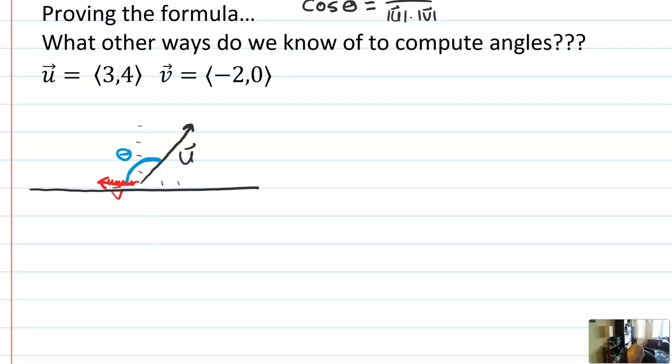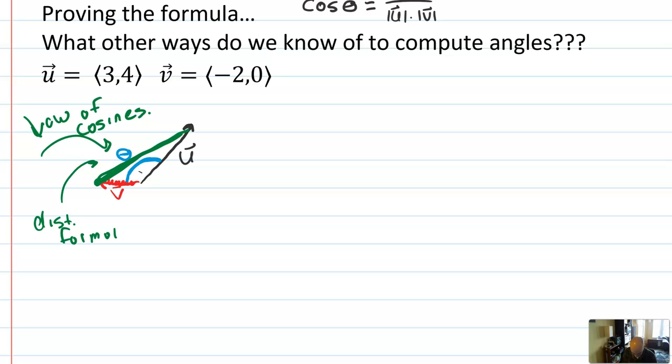Going back to the example from the last video of 3,4 dotted with, or the angle between 3,4 and -2,0, I want to think about some other ways that we know to find angles between two rays like this. One such way would be to pretend we're not on the coordinate plane and instead to pretend that we are in triangle town. Connect the two vectors and then use law of cosines.